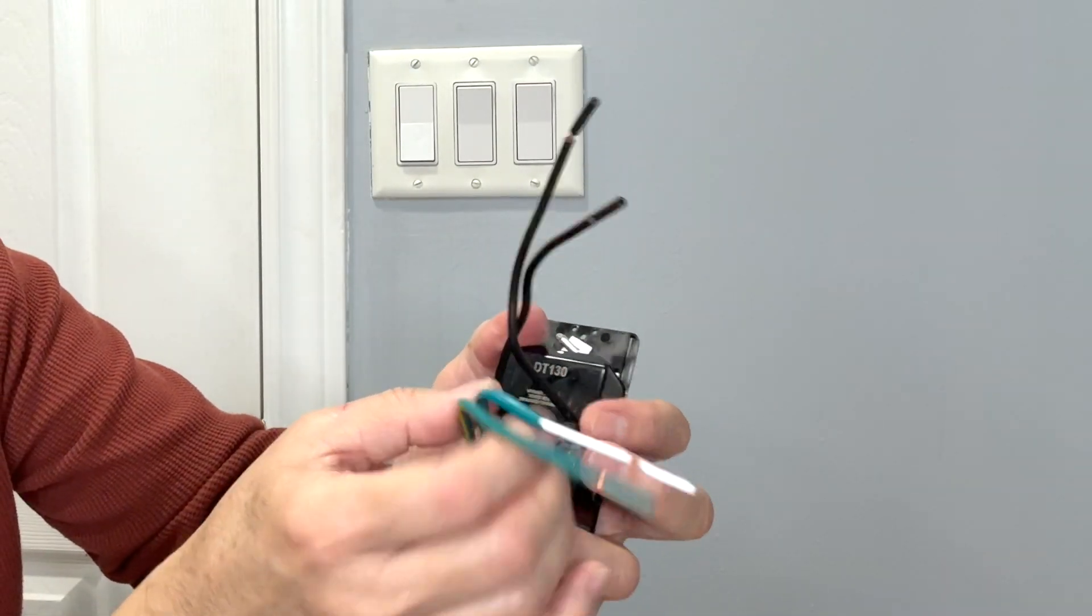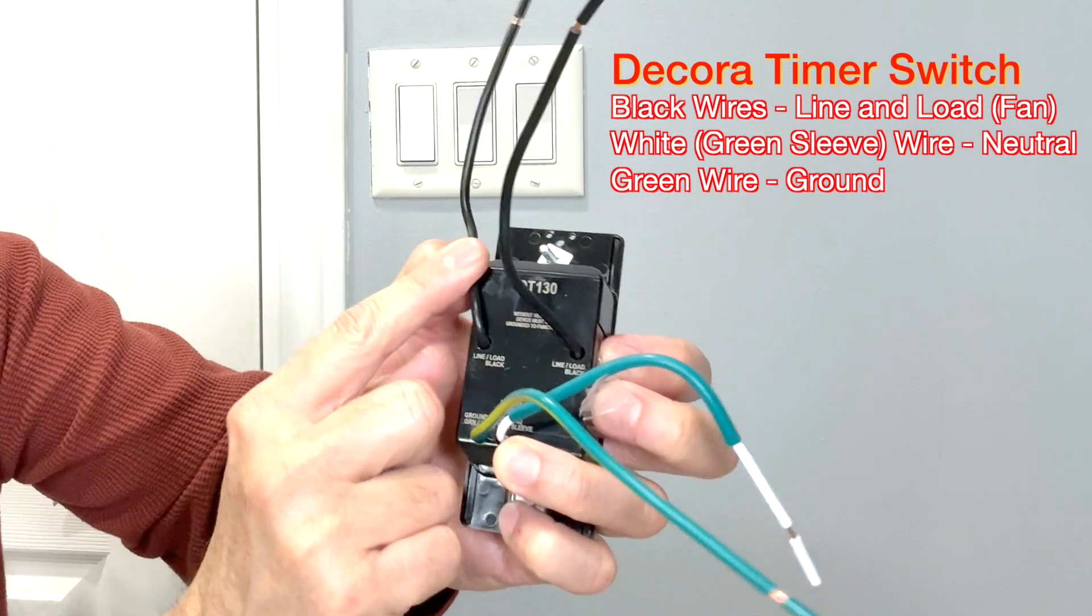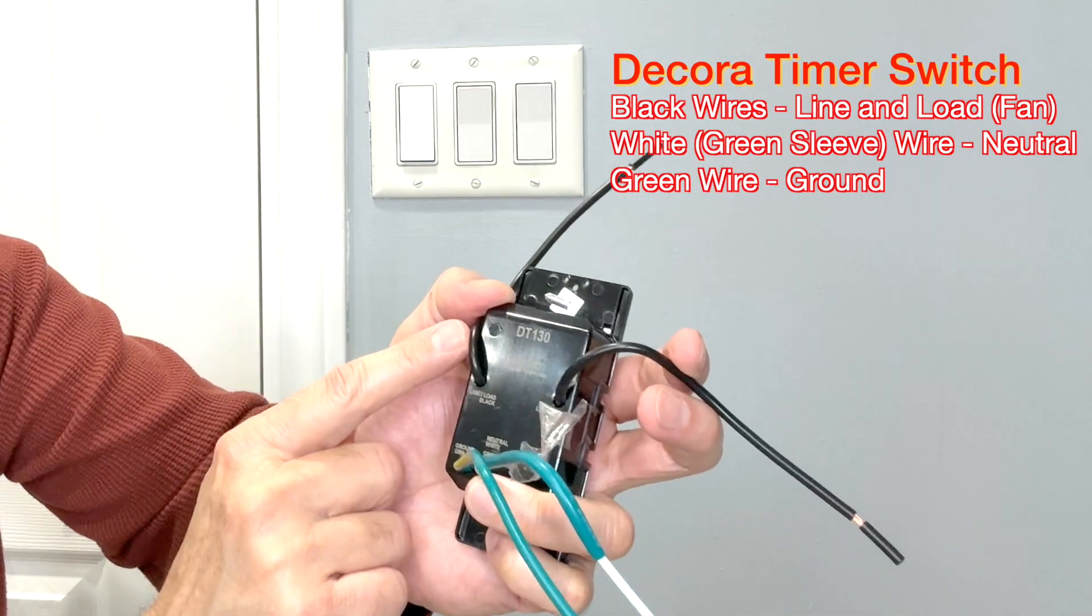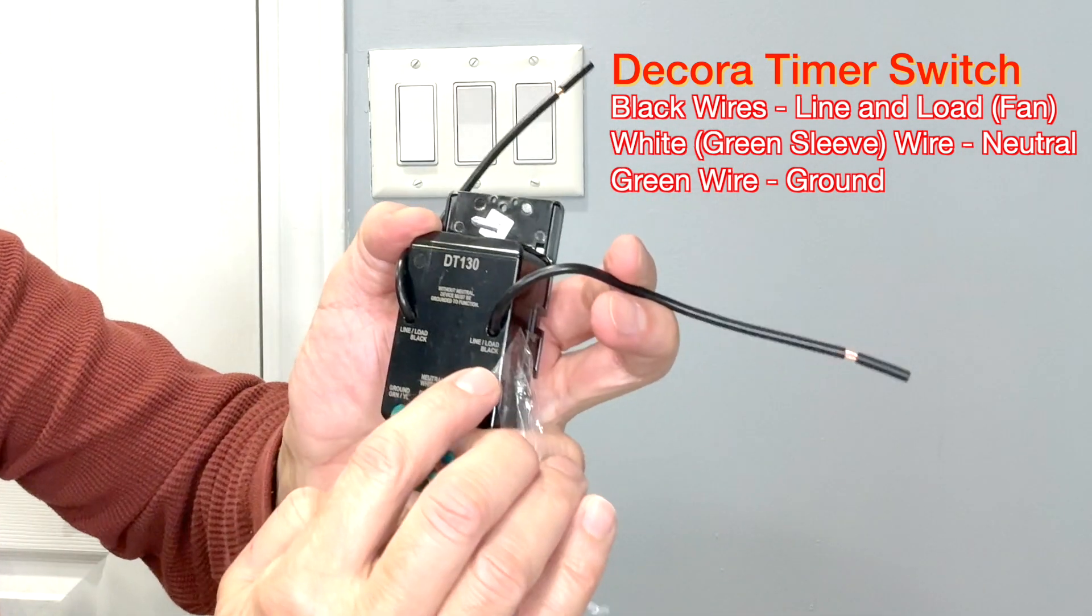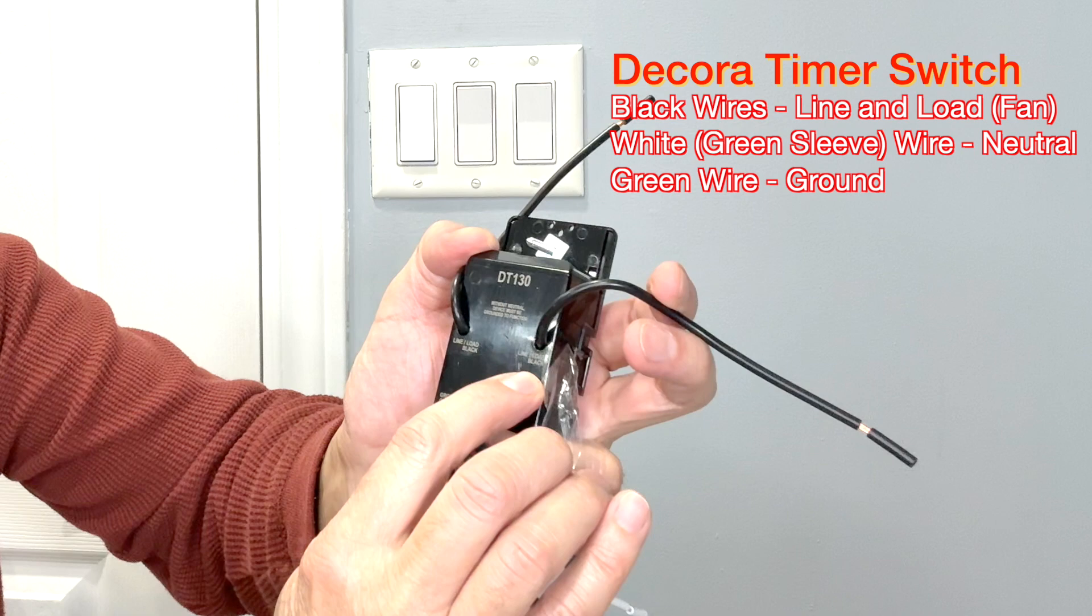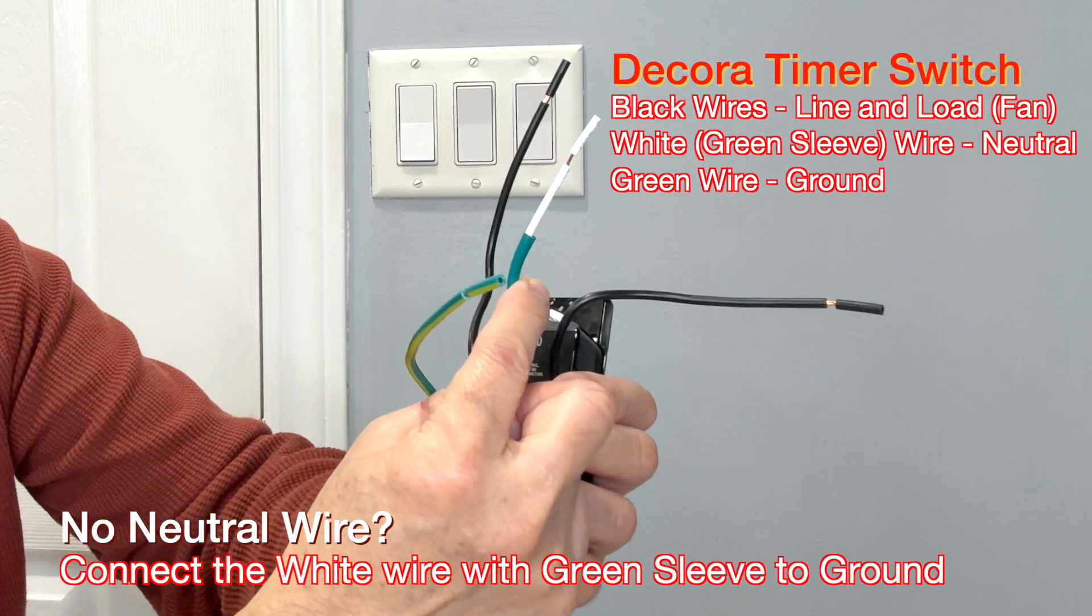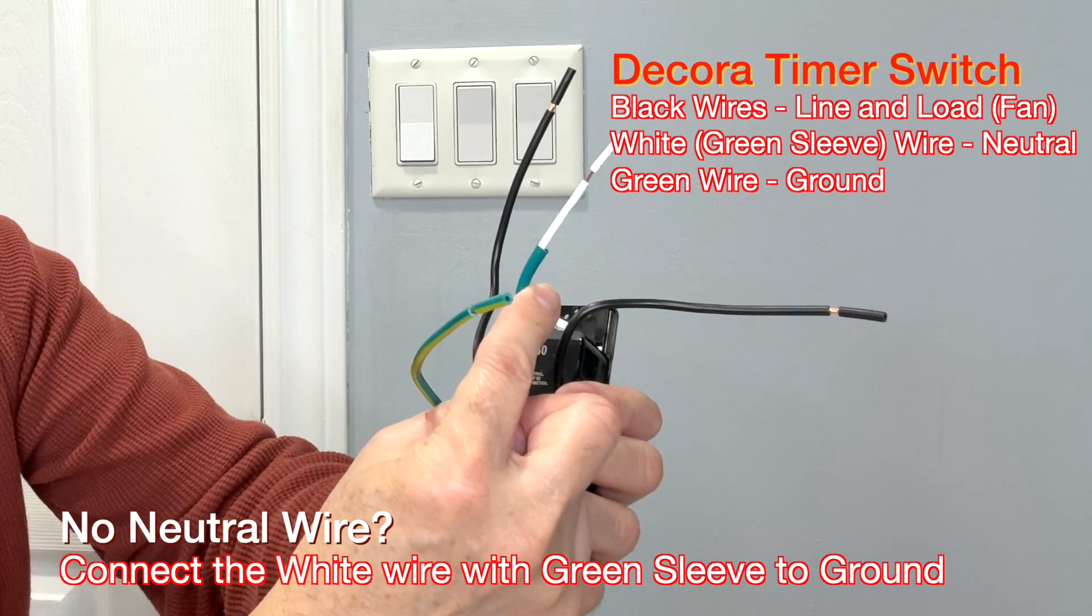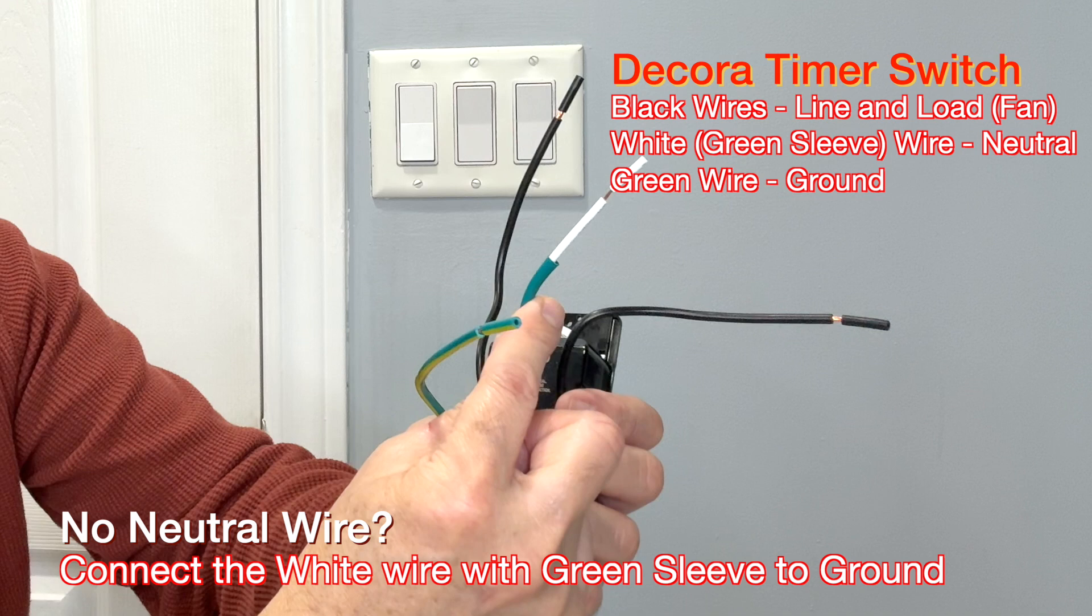Let's take a look at the wires. There are two black wires here. On the left side this wire is the line wire which is connected to the incoming power. This wire here on the right side is the load wire which goes to the fan. Now this white wire with green sleeve indicates that if you have a neutral wire connect this wire to the neutral.